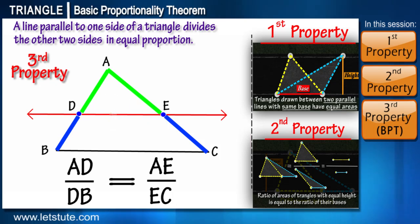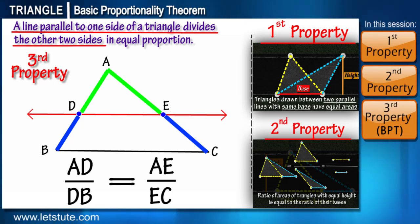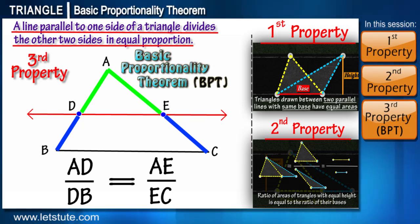The third property we learned in this session is: if a line is drawn parallel to one of the sides of a triangle to intersect the other two sides in distinct points, then the other two sides are divided in the same ratio. This statement is called the Basic Proportionality Theorem.